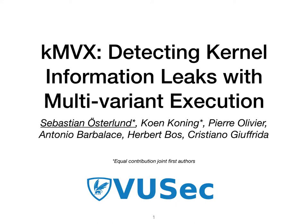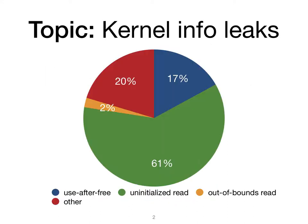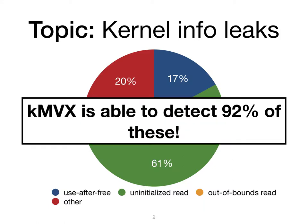We present KNVX, a multivariant execution based approach to preventing information leaks in the operating system kernel. Prior defenses against infoleaks usually focus on one single class of bugs, such as uninitialized reads or out-of-bounds reads. KNVX is a blanket mitigation against kernel infoleaks caused by various classes of bugs.